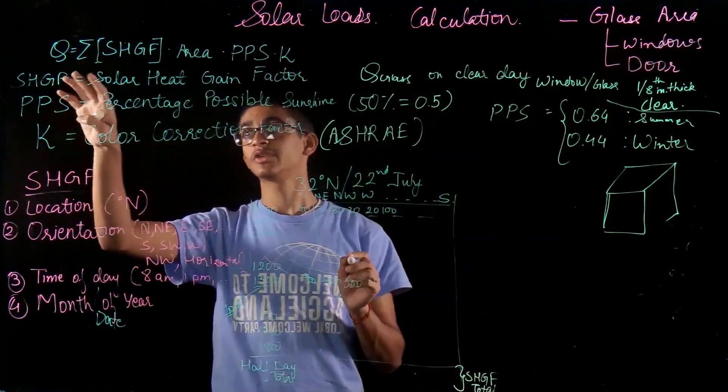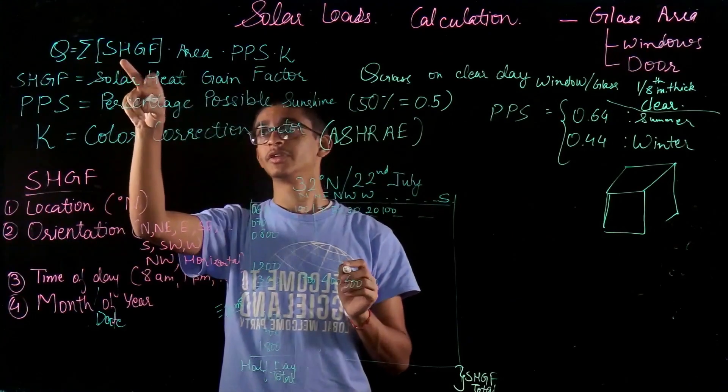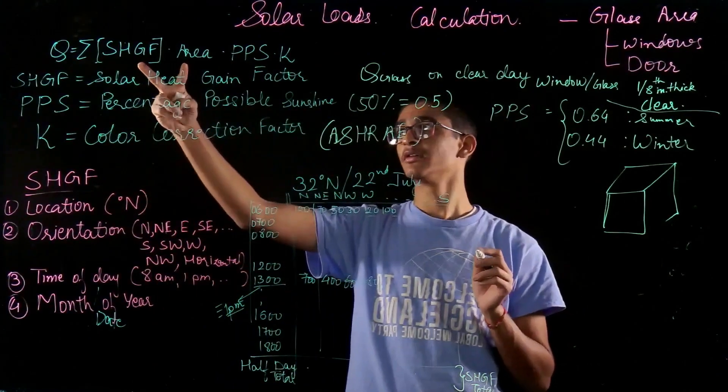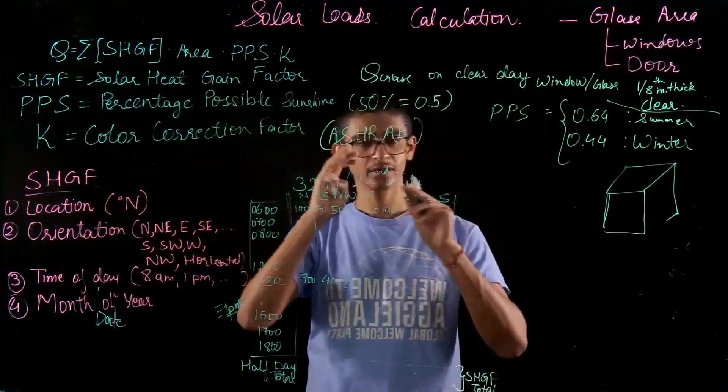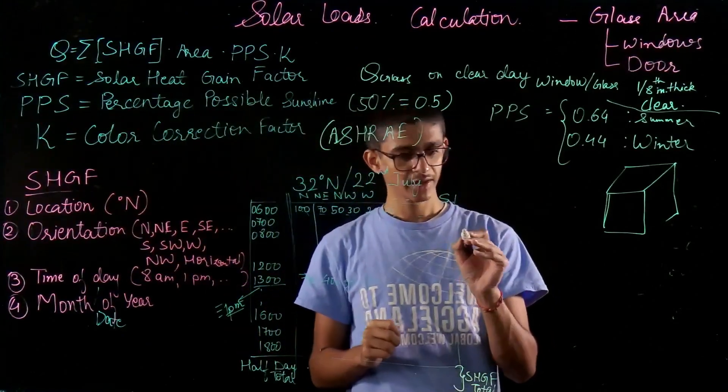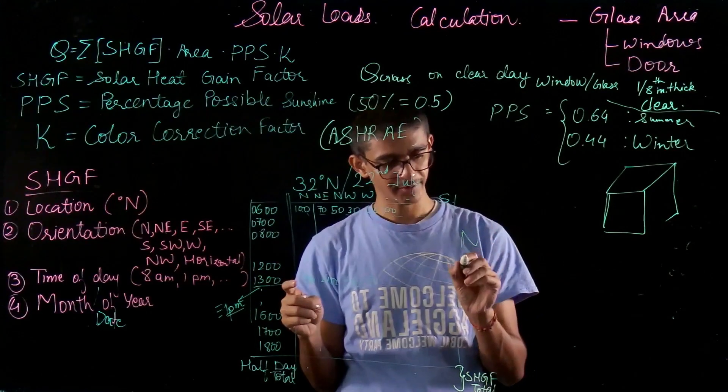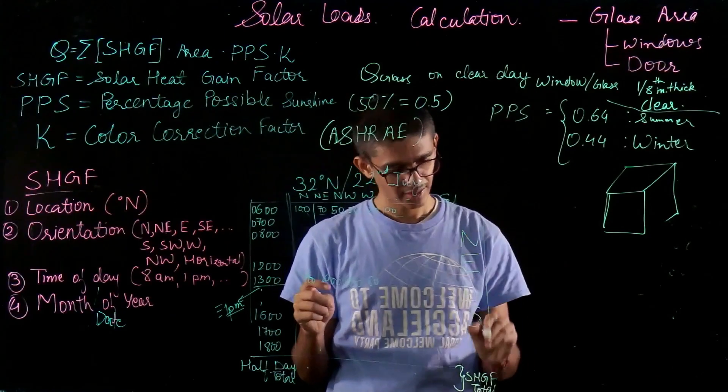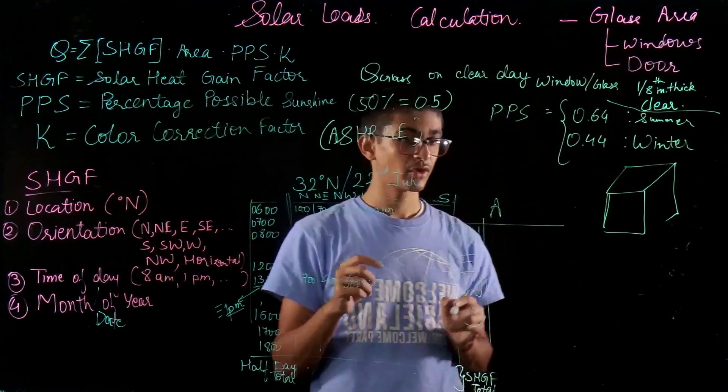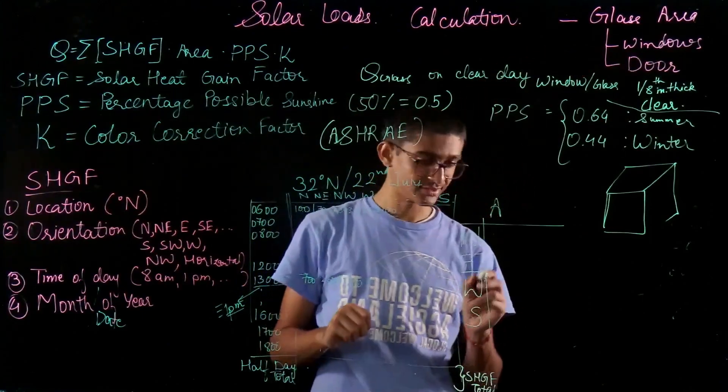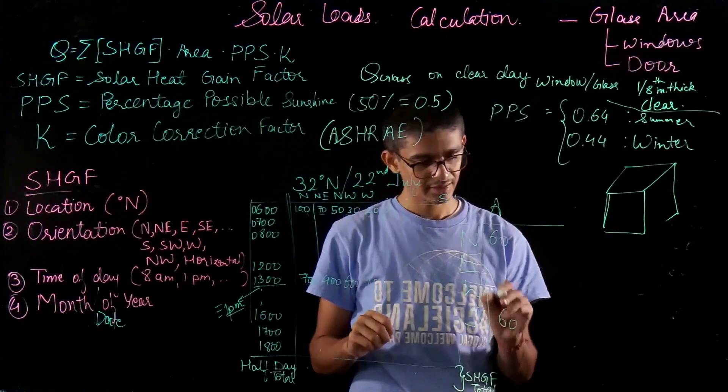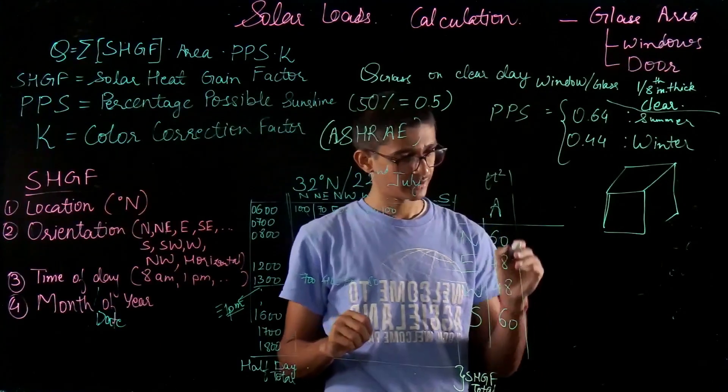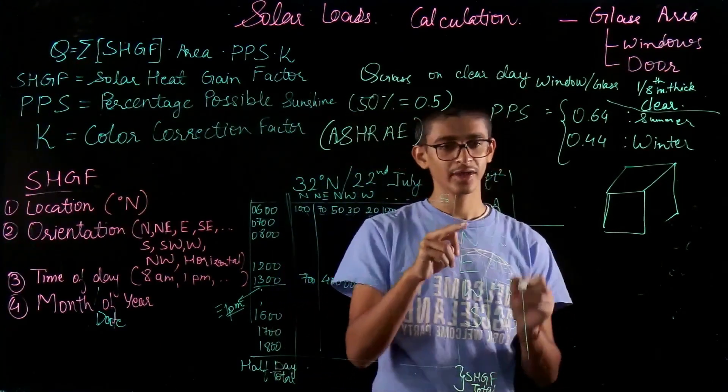To calculate the Q value, we need SHGF into area into PPS into K. PPS and K values are going to be constant, they don't change with different orientations. The areas could be changed. We need to find out the total value of SHGF into area for the building. We have four orientations: north, east, west, and south. For these four orientations, my areas of window glass area is given as north has 60, south has 60, then another two has 48, 48, in feet square.